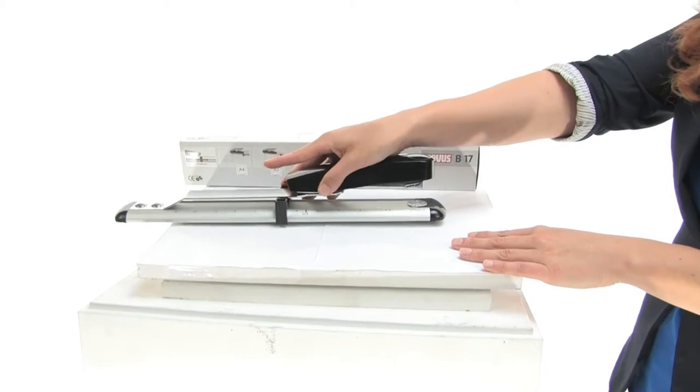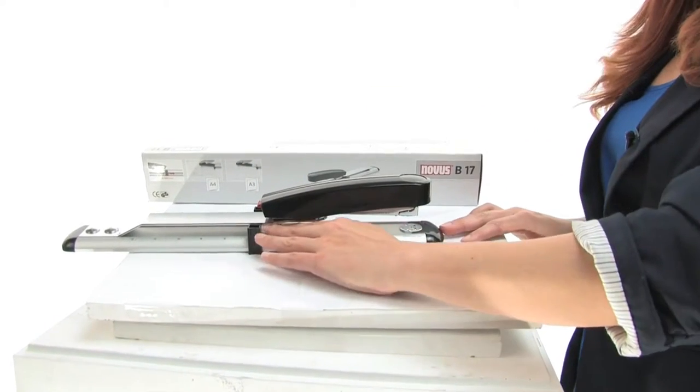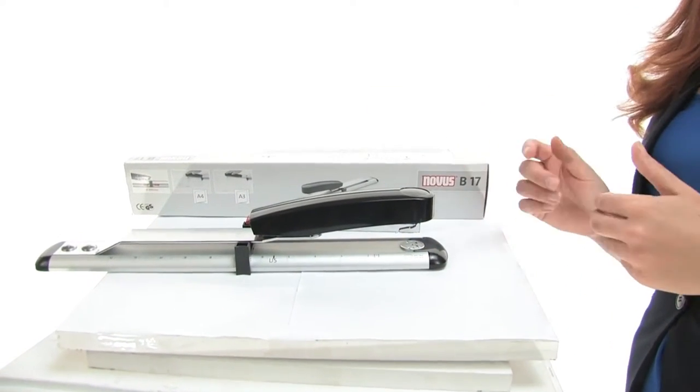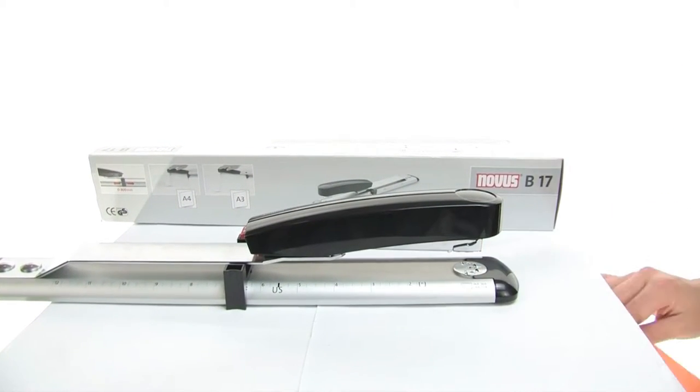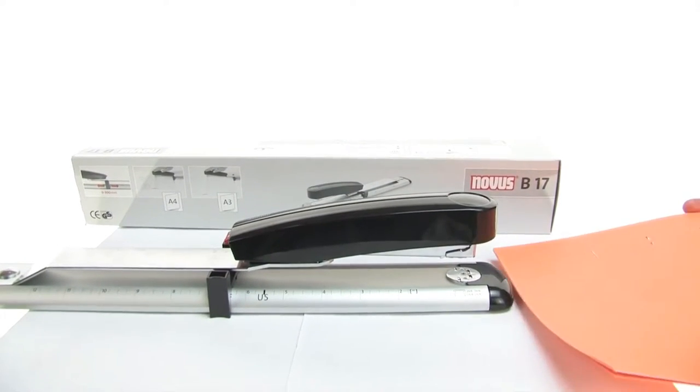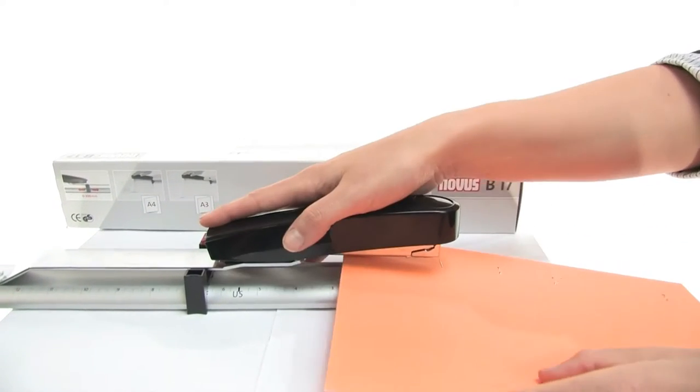It has a throat depth of 11 and 3 quarters inches, making it perfect for binding booklets in addition to your everyday stapling. It has an adjustable depth guide with inch and metric scales and can staple up to 40 sheets at one time.